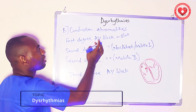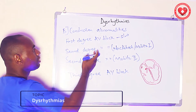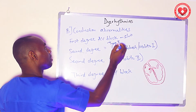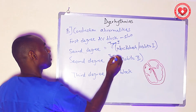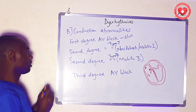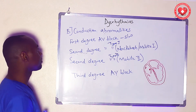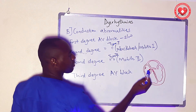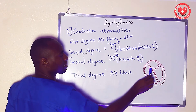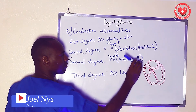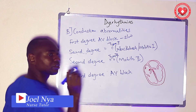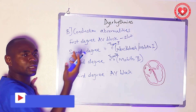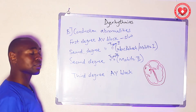We have first degree, second degree, and third degree atrioventricular blocks. In the first degree AV block, all impulses from the sinoatrial node pass successfully through the AV node, however they travel at a slower rate than normal — so every impulse passes through, just at a slow rate.